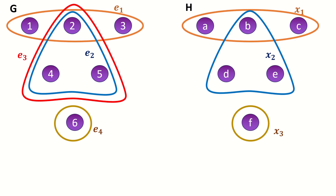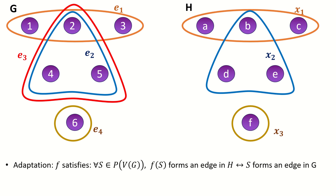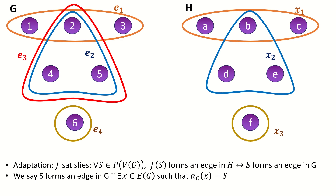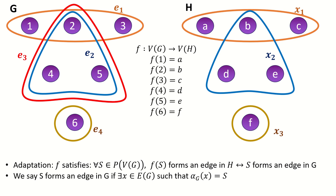Well, consider the two hypergraphs shown here. Intuitively, they shouldn't be isomorphic, because one has more than one edge containing the same three vertices, and the other has just one edge containing the same three vertices. However, if we adapt our current definition of isomorphism to mean that there's a vertex mapping F that preserves sets of vertices that form an edge both ways — whereby 'forms an edge' means that the set is the image under an incidence function of some edge object — then these hypergraphs are isomorphic with the following isomorphism F. This example shows us that the problem with our original definition, when applied to hypergraphs with repeated edges, is that it's not able to tell whether hypergraphs have different numbers of edges incident to a given set of vertices.